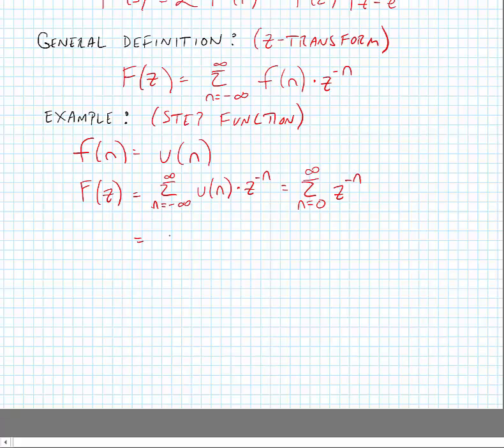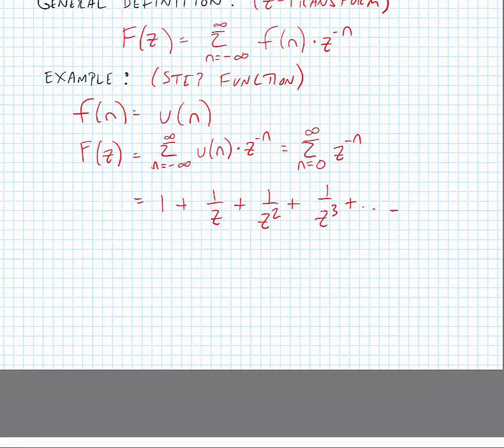And of course, if we expand this, this is just one plus one over z plus one over z squared plus one over z cubed, etc. Now we can compress this, and we know that this has a closed form solution, and it's equal to one over one minus z to the minus one, or z divided by z minus one, if we multiply the numerator and denominator by z.